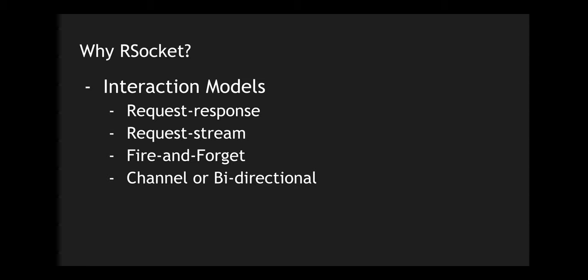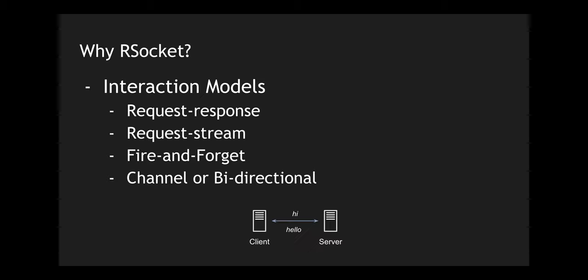In the bi-directional communication, both the server and the client can request and respond. For example, the client says 'hi' to the server, the server responds with 'hello', and then the server can call back the client. This is possible within the channel or bi-directional model. RSocket supports all four of these interaction models, so you can develop your client-server contract with a mixture of all of them.